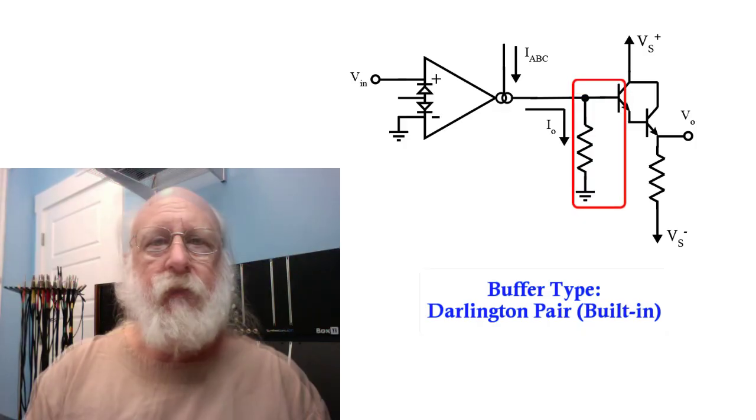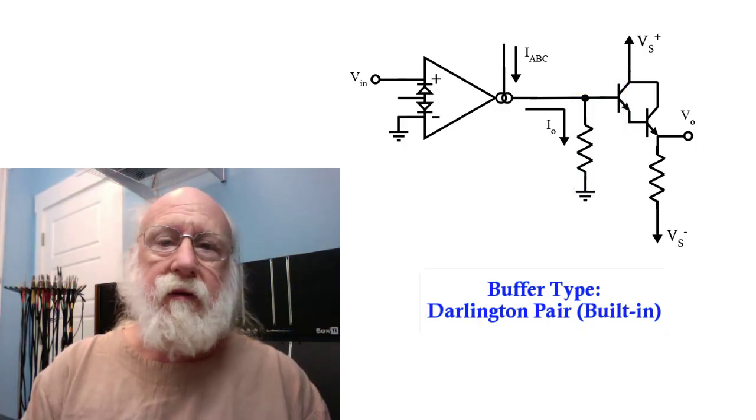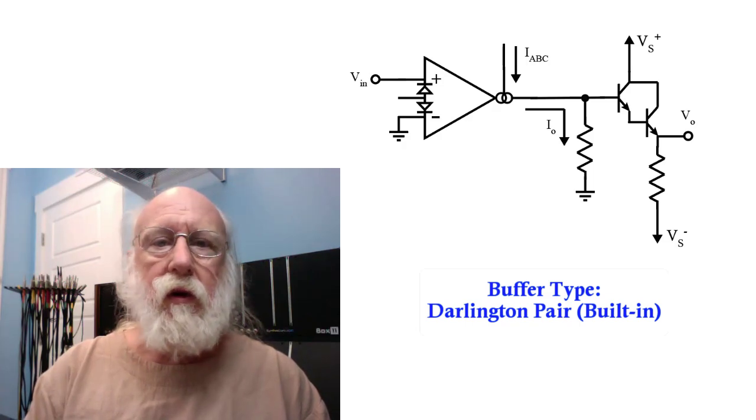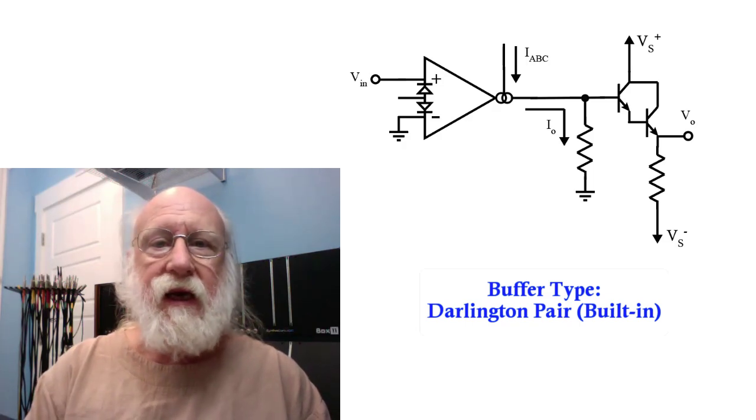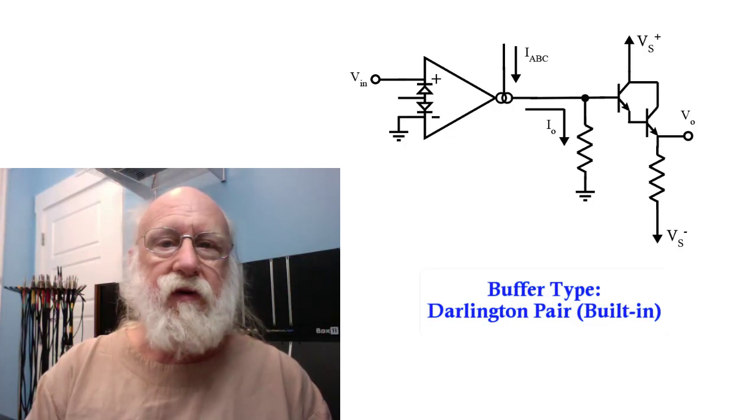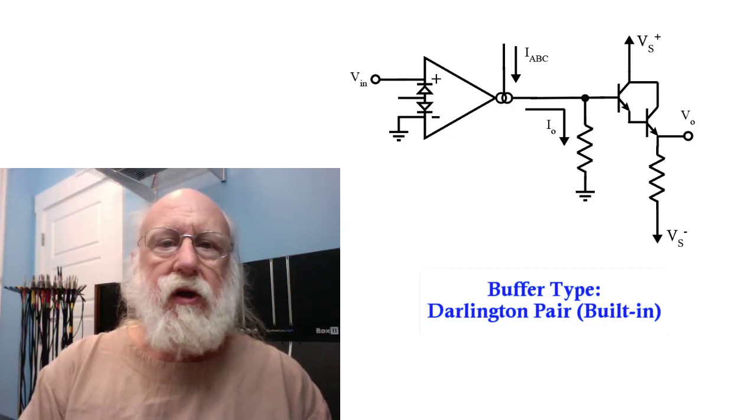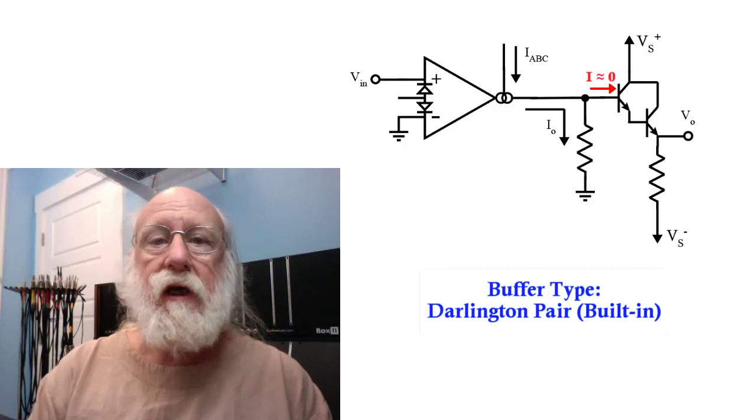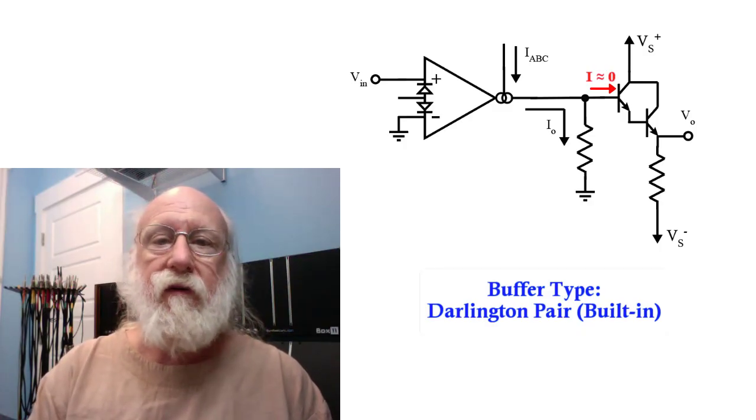The reason this is a Darlington pair rather than just a single transistor is that the current gain of the cascaded transistors is far higher than a single transistor by itself, so the input current is really quite small. Thus, it steals very little current from the resistor.